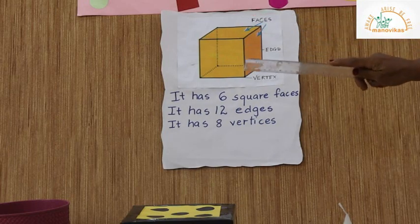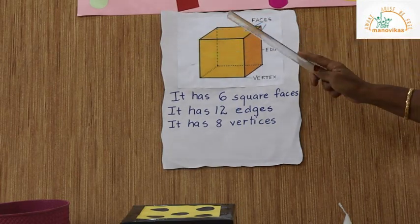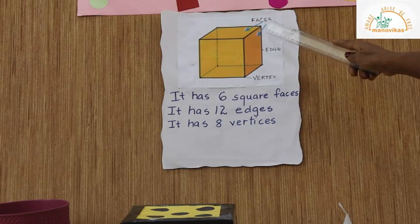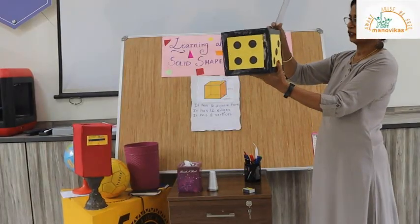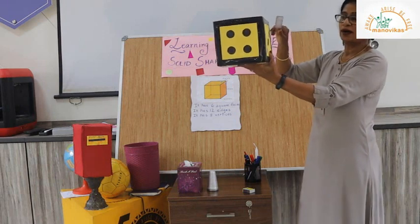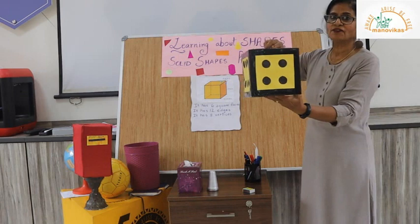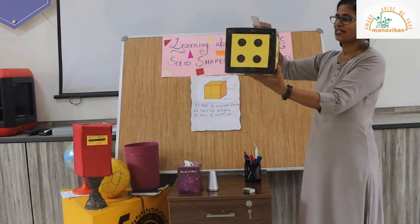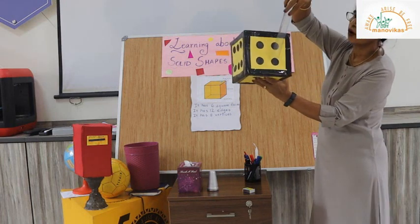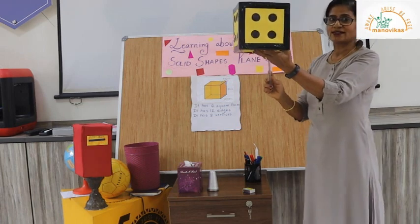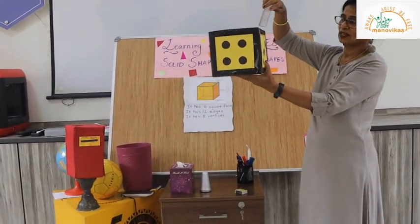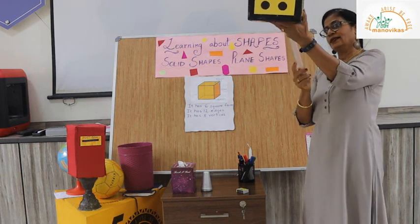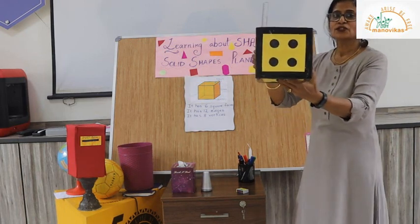A cube has six square faces. In our plane shapes we learned about a square, and a cube is made up of six square faces. It has twelve edges — these parts of the cube are the edges. When we count the surfaces we get six faces: one, two, three, four, five, six. And we have twelve edges: one, two, three, four, five, six, seven, eight, nine, ten, eleven, twelve.